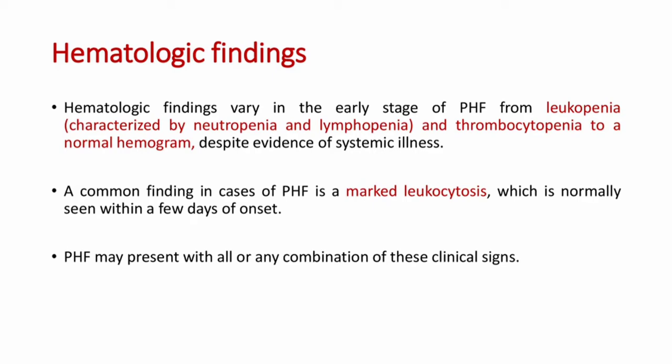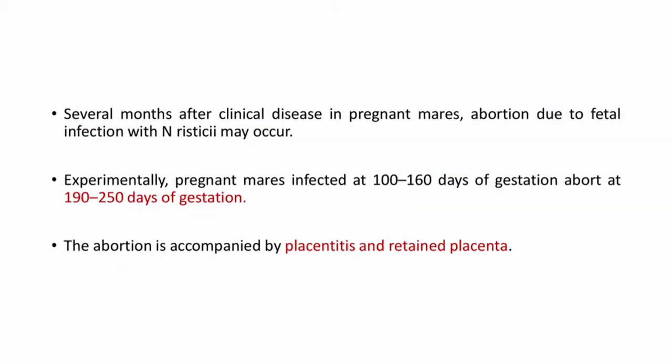Hematologic findings range from leukopenia characterized by neutropenia and lymphopenia and thrombocytopenia, to a normal hemogram despite evidence of systemic illness. A common finding in cases of PHF is marked leukocytosis, normally seen within a few days of onset. The disease may present with many other combinations of hematologic findings.